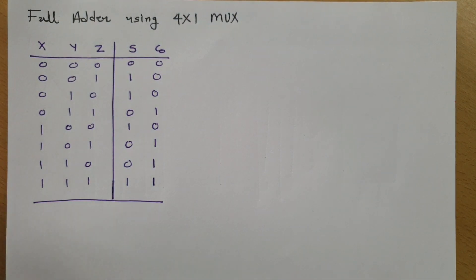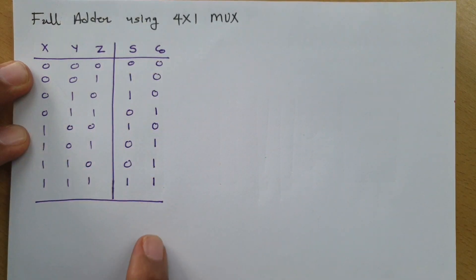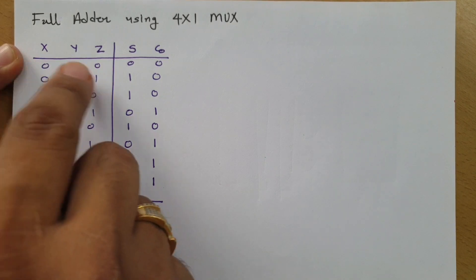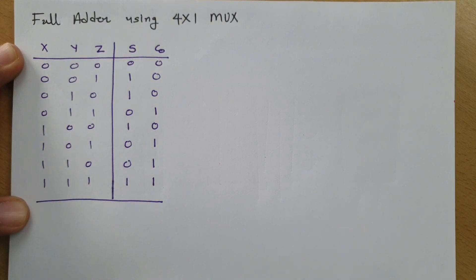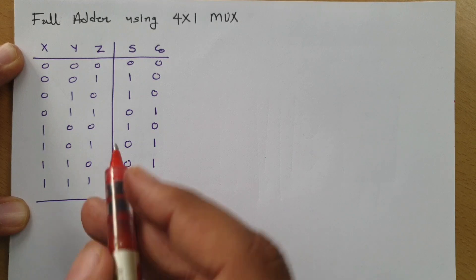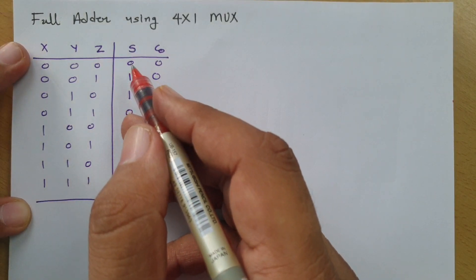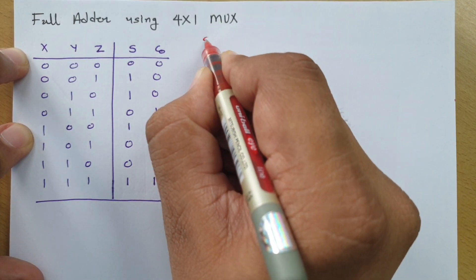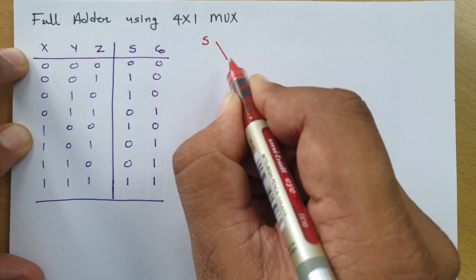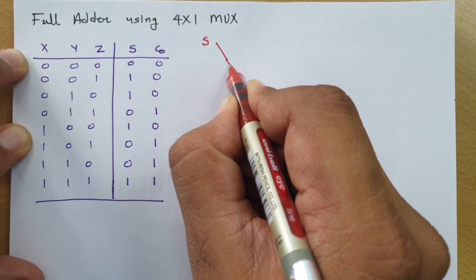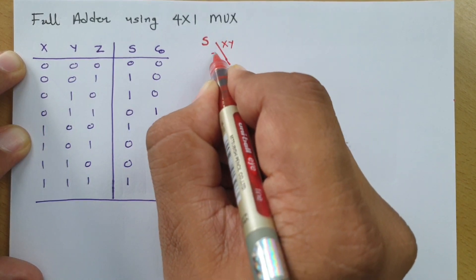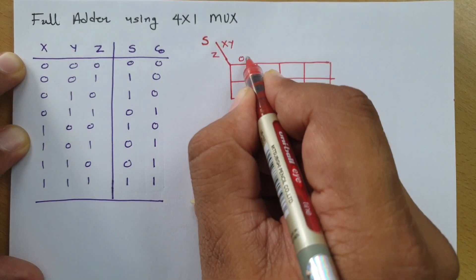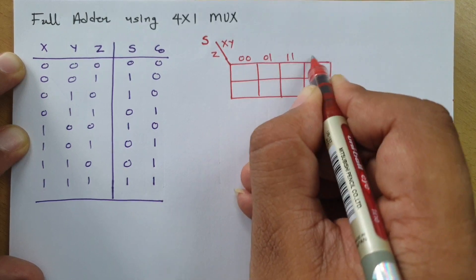Now we will implement this sum and carry using a 4x1 multiplexer with inputs x, y, and z. To implement sum, we need to write its Karnaugh map. Here, the K-map for S has inputs x, y on one axis and z on the other, with the input combinations 00, 01, 11, 10 along x and y.